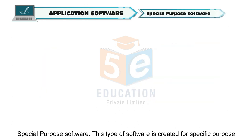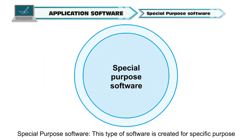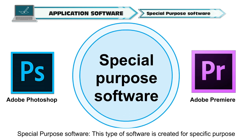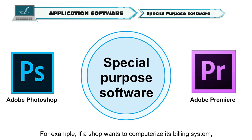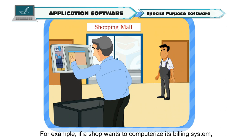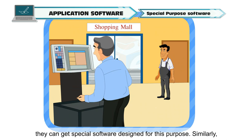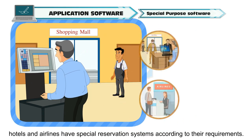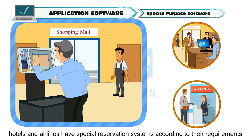Special purpose software is created for a specific purpose of the customer. For example, if a shop wants to computerize its billing system, they can get special software designed for this purpose. Similarly, hotels and airlines have special reservation systems according to their requirements.